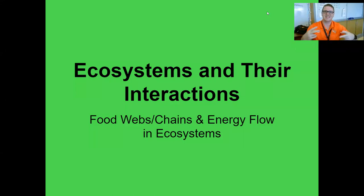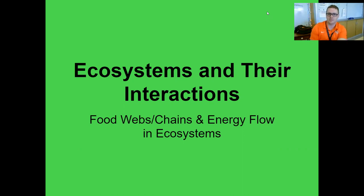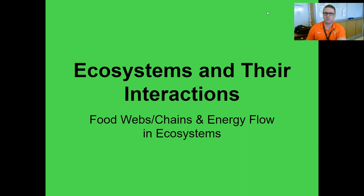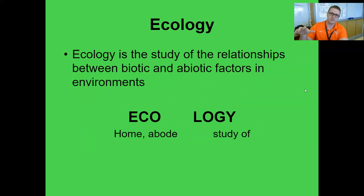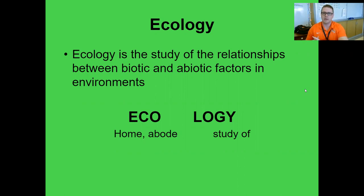Hello and welcome to the second video in our ecology unit, titled Ecosystems and Their Interactions. Throughout these slides we're going to take a look at food chains, food webs, and more specifically how energy can flow through our ecosystems. Before we dive in, we need to get some basics down. Ecology is the study of relationships between living and non-living things — biotic and abiotic factors.